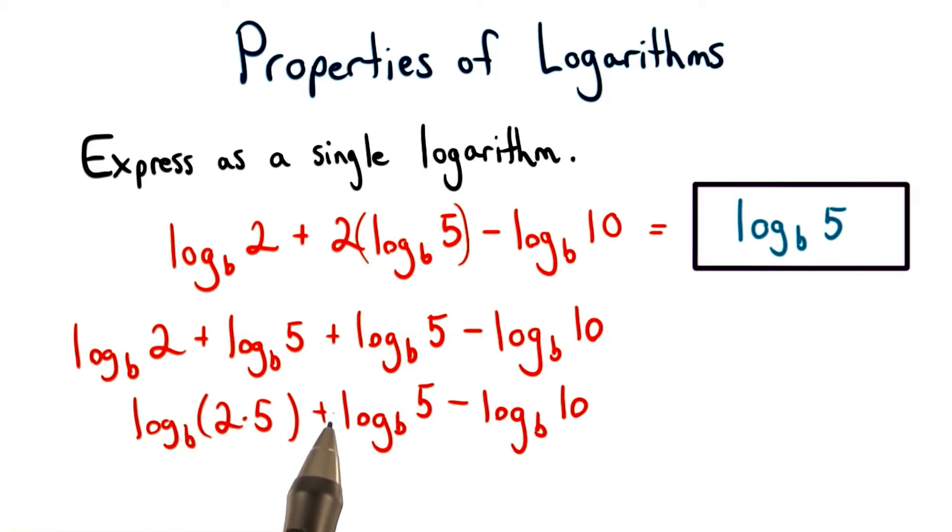I'm going to do this one more time. I have another addition here, so I can multiply these numbers with this number. So we have log base b of 2 times 5 times 5 minus log base b of 10.